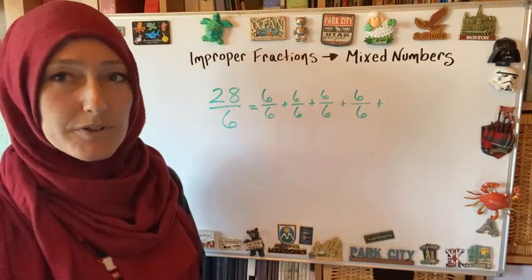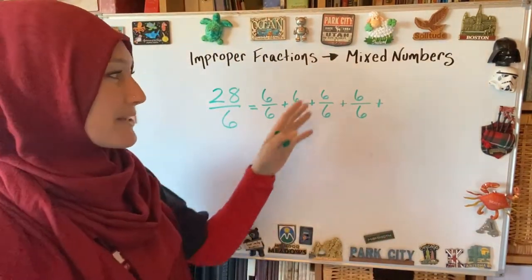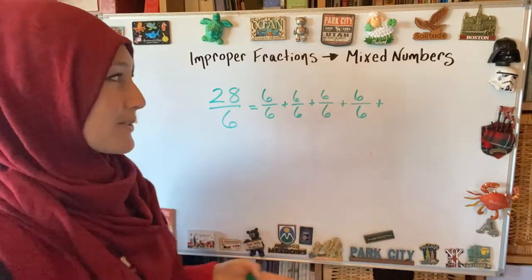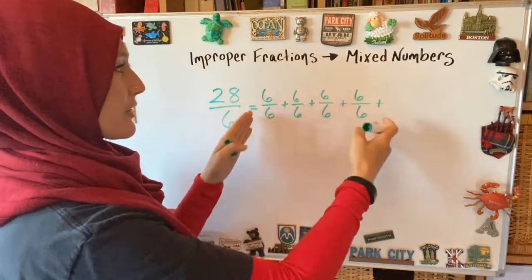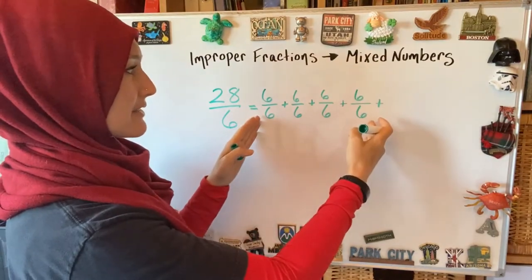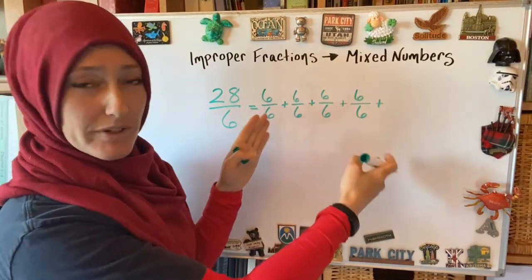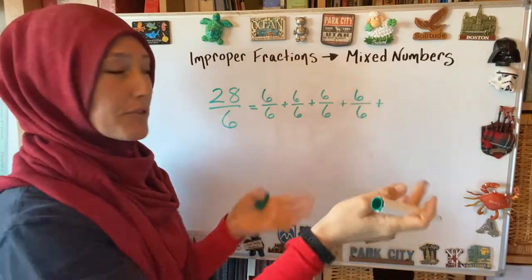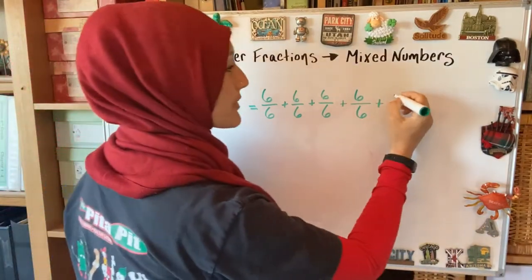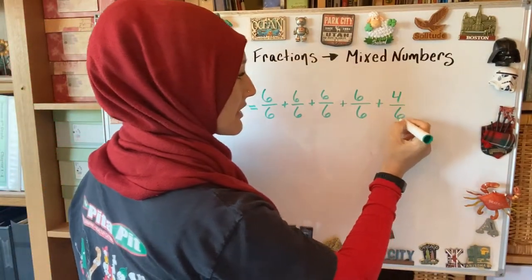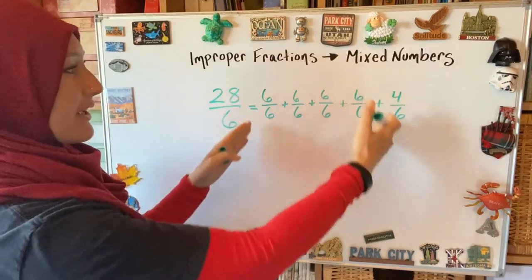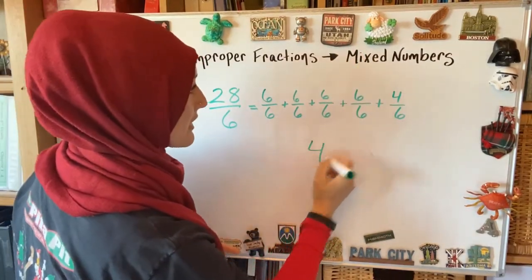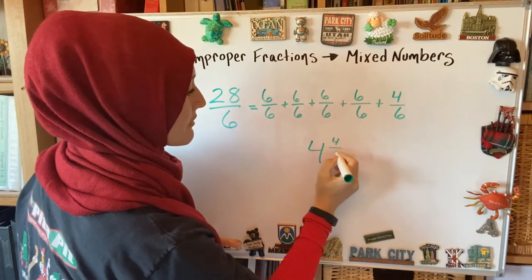I can't do another full six-sixths, so I stop. In the process, you're kind of doing the shortcut — 4 times 6 is 24, and between 24 and 28 there are 4 left. So I have 4 wholes and 4/6 left over.